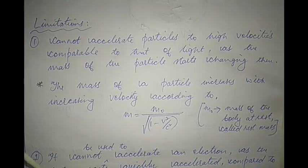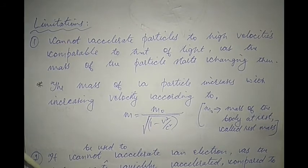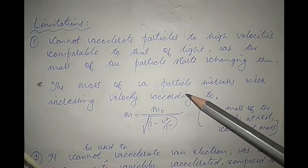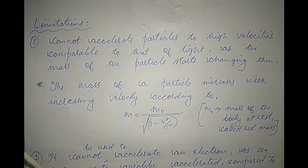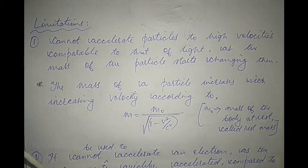A cyclotron cannot be used to accelerate particles to very high velocities — velocities comparable to that of light. Once a particle starts achieving such velocities, its mass starts increasing and is no longer constant. This change in mass with velocity falls in the domain of relativistic mechanics. As long as mass is constant, Newtonian physics applies, but once the velocity is comparable to light, Newton's laws stop being valid and we enter the domain of the theory of relativity.